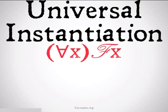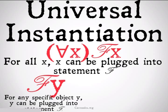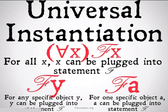Universal instantiation first. For all X, X can be plugged into statement F. We can conclude from that FY — for any specific object Y, Y can be plugged into statement F. We can also conclude FA — for one specific object A, A can be plugged into statement F.